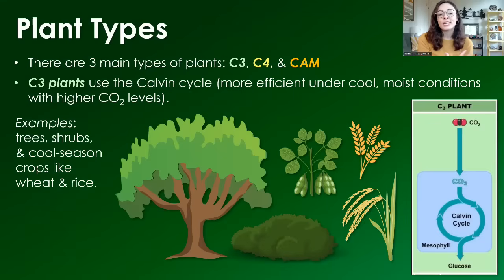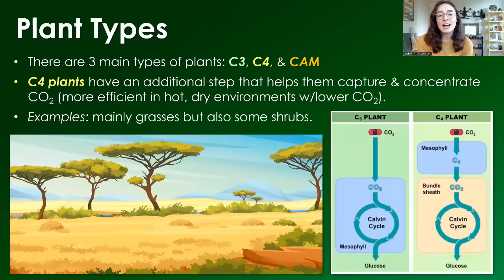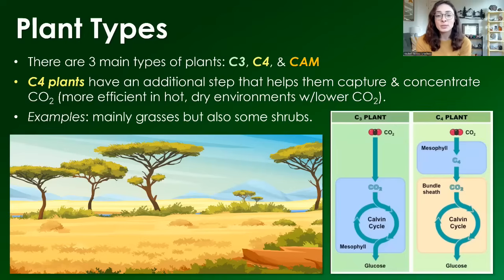C3 plants use the Calvin cycle and are more efficient under cool, moist conditions with higher CO2 levels. Examples of C3 plants include trees, shrubs, and cool season crops like wheat, rice, and soybeans. Whereas C4 plants have an additional step in their photosynthesis that helps them capture and concentrate CO2, making them more efficient in hot, dry, or arid environments with lower CO2 levels. Examples of these are mainly grasses, but also some shrubs.